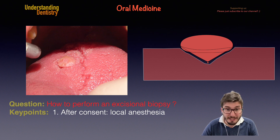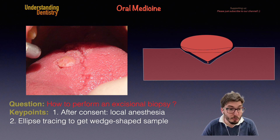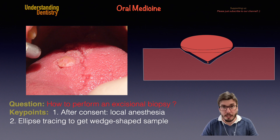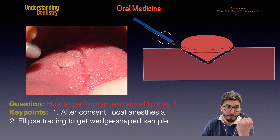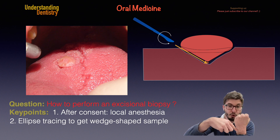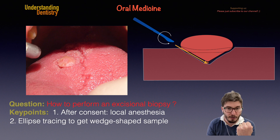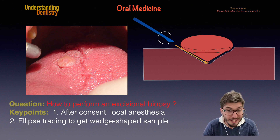The next step is the incision to remove the lesion. You want to have your scalpel blades facing the center of the base of the lesion, then perform an elliptical tracing in order to get a wedge-shaped sample. You will surround and contour the lesion with the blade facing the center — slightly sideways — and perform the elliptical tracing to remove the lesion safely. We don't need to go too deep since it is a small lesion.